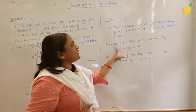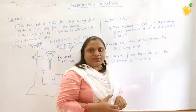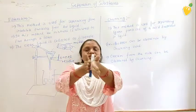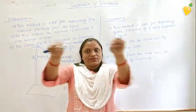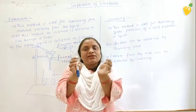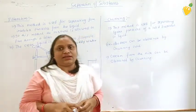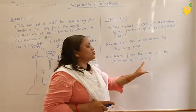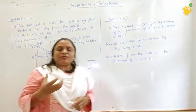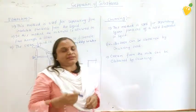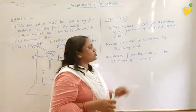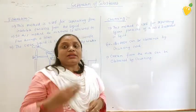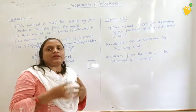The examples of churning are: butter can be obtained by churning curd. When you churn the curd, the butter is collected at the sides and the liquid is left at the center. Cream can also be separated from full cream milk by the process of churning. This is all about solids which are insoluble in liquid.